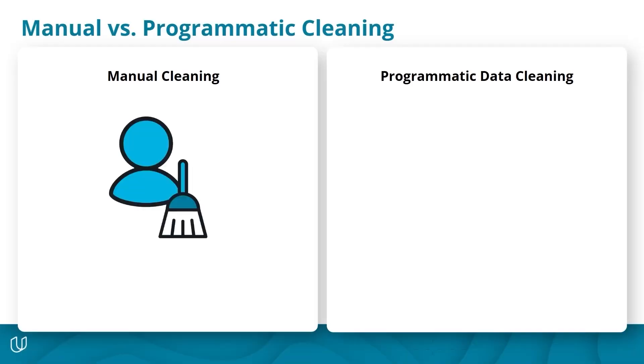Programmatic cleaning refers to using code or automated scripts to clean your data, and it's actually preferred over manual cleaning. When you manually clean data, you might typically be retyping data or copying and pasting columns and rows to correct issues by hand. This type of cleaning is inefficient, and as datasets grow larger and more complex, it becomes increasingly challenging to maintain data quality manually. It's also error prone — you might accidentally miss incorrect values or introduce new errors while typing or copying data.